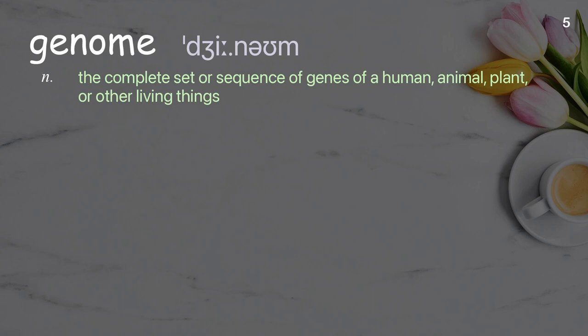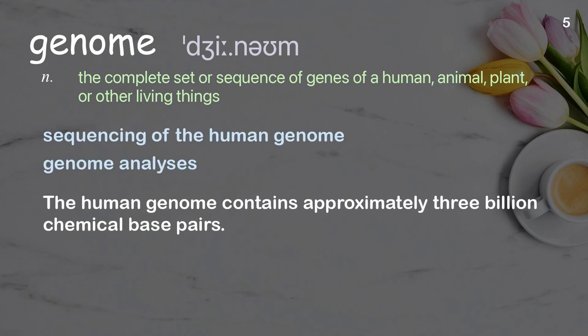Genome: the complete set or sequence of genes of a human, animal, plant, or other living thing. Examples: sequencing of the human genome, genome analyses. The human genome contains approximately three billion chemical base pairs.